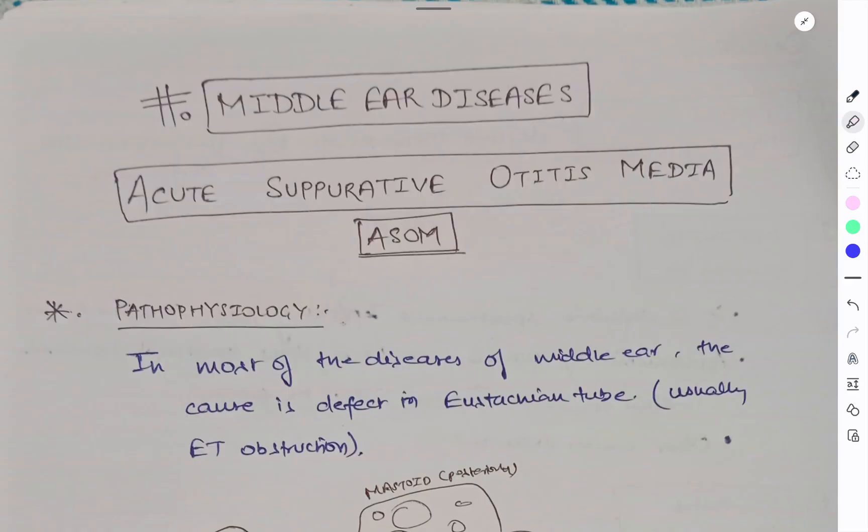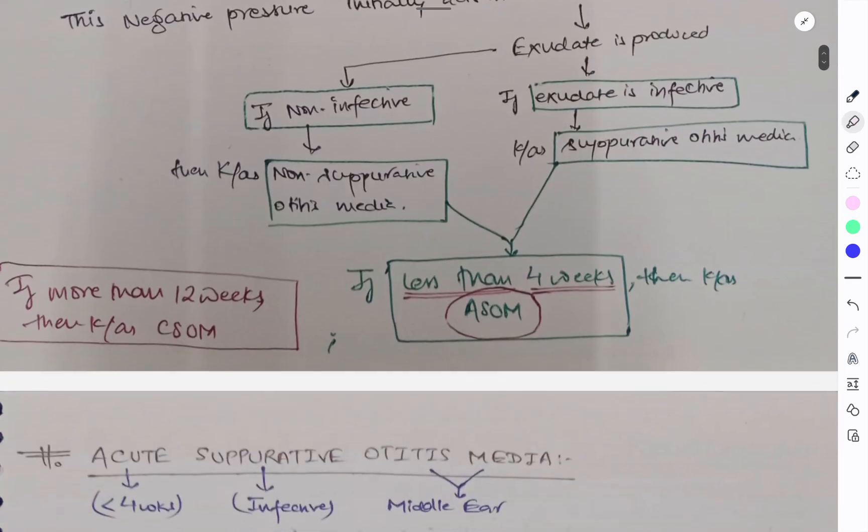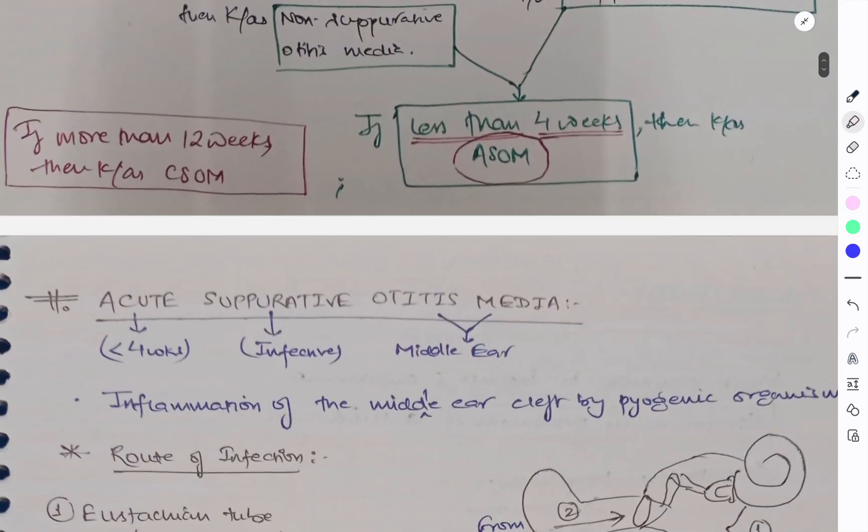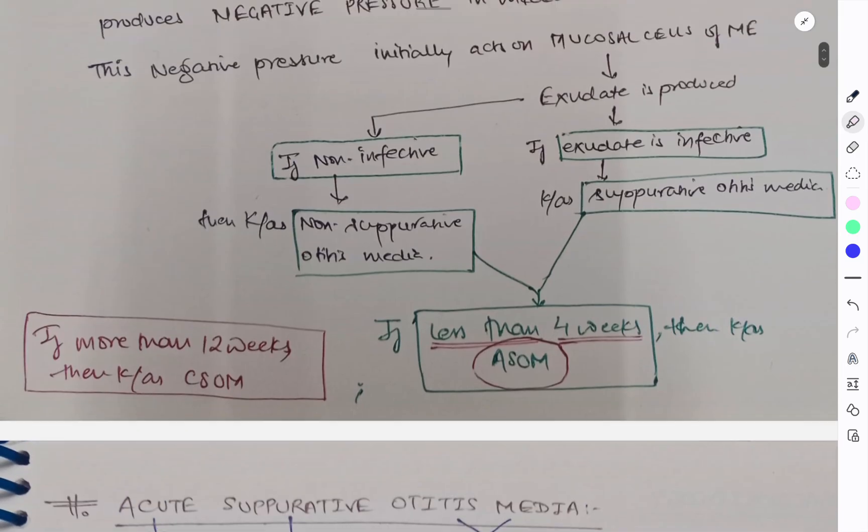Hello guys, I am Deepak Shukla, a final year MBA student. Welcome to our channel Study Media. Today let's learn about middle ear disease, that is Acute Suppurative Otitis Media. So what do you mean by acute suppurative otitis media? Acute means less than four weeks, suppurative means infective, otitis media indicates middle ear. So it's mainly inflammation of middle ear cleft by pyogenic organisms.